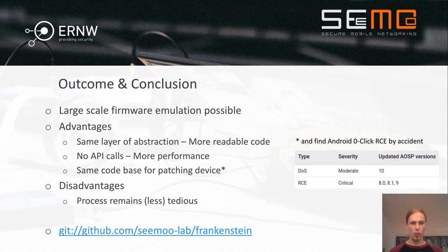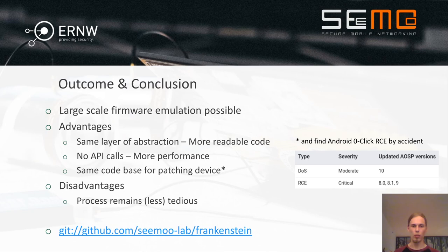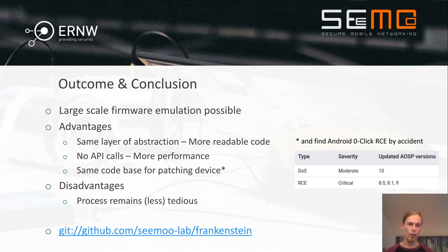Our outcome and conclusion: large-scale firmware emulation is possible — you are not restricted to a single handler; you can emulate the whole operating system and other components of the firmware. Our approach has advantages compared to Unicorn. First, we use C, giving us the same layer of abstraction, which leads to more readable code since we don't need several API calls to, for example, dereference a pointer when iterating over a linked list. In addition, without those API calls, we are more performant. We re-implemented the heap sanitizer in Unicorn and proved that our approach was roughly one order of magnitude faster in this particular case.